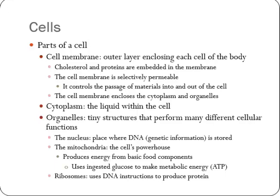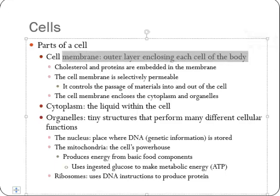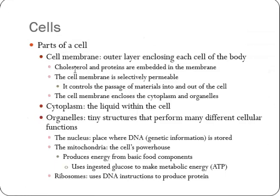Now let's look at cells in a bit more detail. The cell itself has a cell membrane, which is the outer layer of the cell. Cholesterol — which has a bad reputation but is necessary to some extent — along with proteins, is embedded in the membrane, and that allows certain things in and certain things out. The membrane is what is called selectively permeable: some things are allowed in, some things are allowed out.